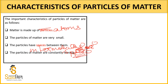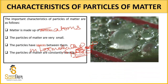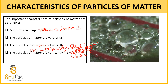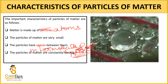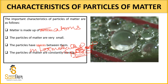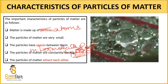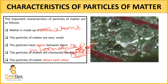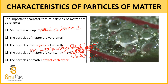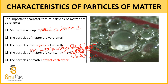Particles of matter constantly move — we have studied that they are in Brownian motion. The particles also have a force of attraction between them. For example, when two or three droplets combine and become one droplet, this is due to the force of attraction between the particles of that matter.